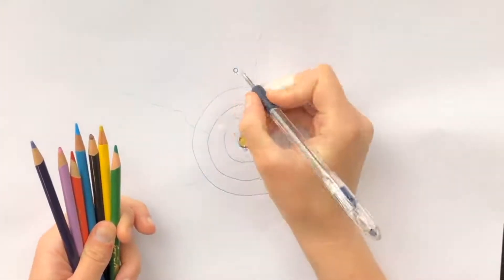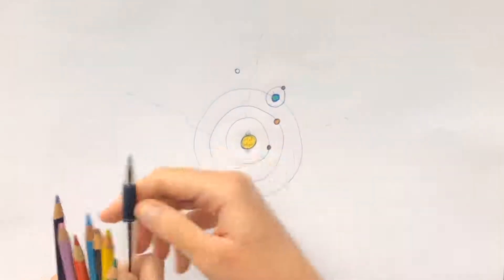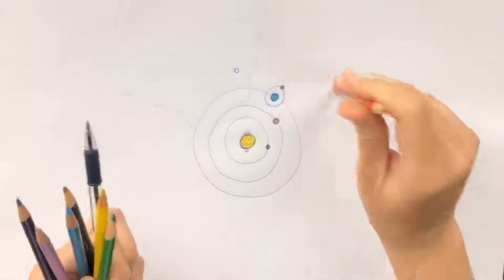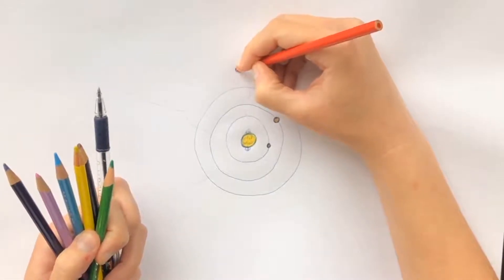Now you may have seen Mars in the night sky. Like Venus, it's fairly easy to see without the aid of a telescope. You just need to know where to look for it.